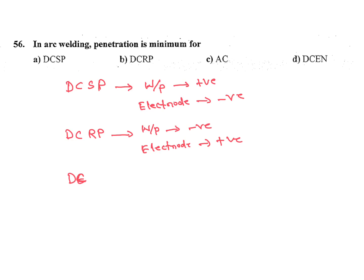Then DCEN direct current electrode negative so workpiece is positive and electrode negative, both are the same here.